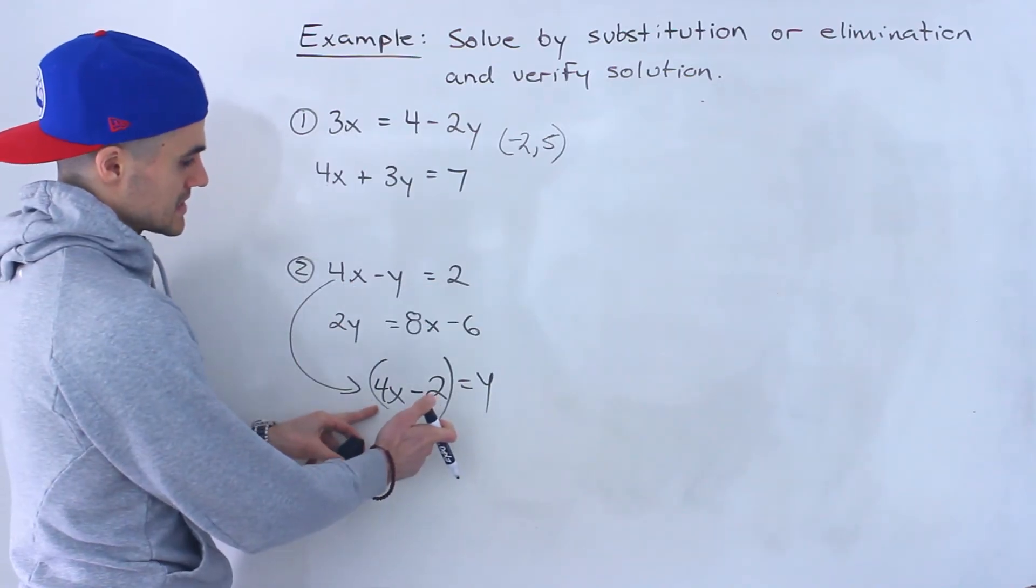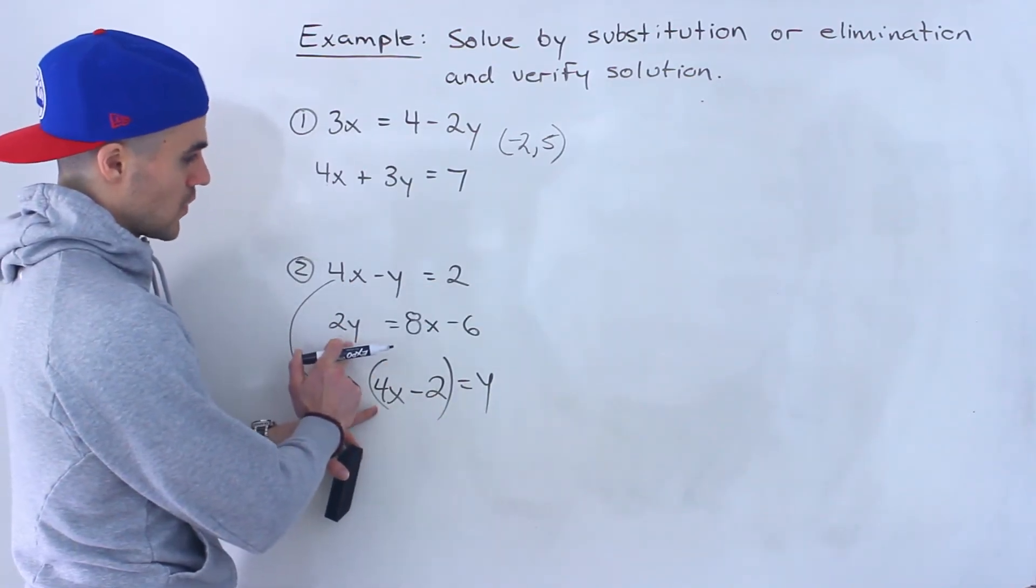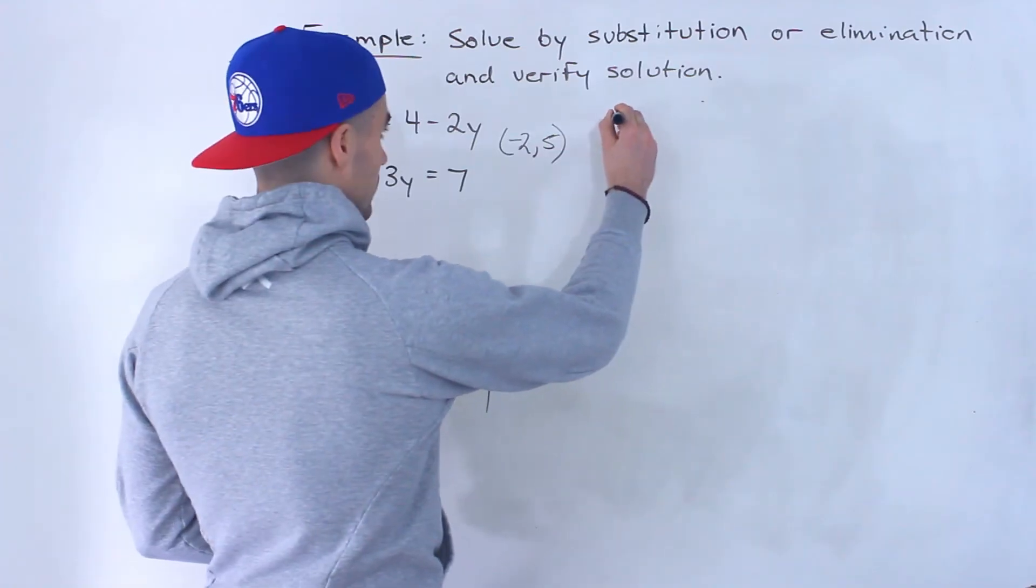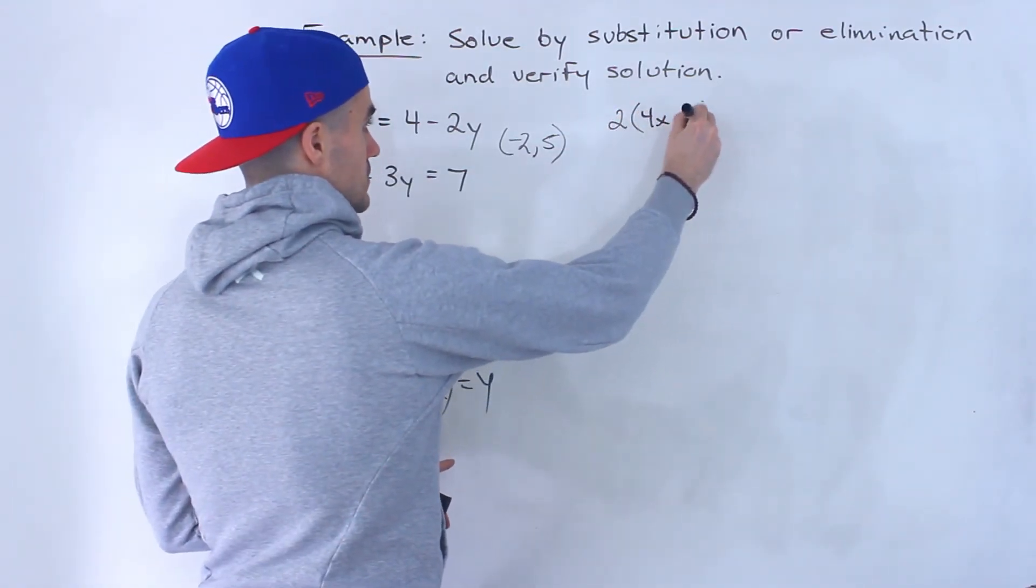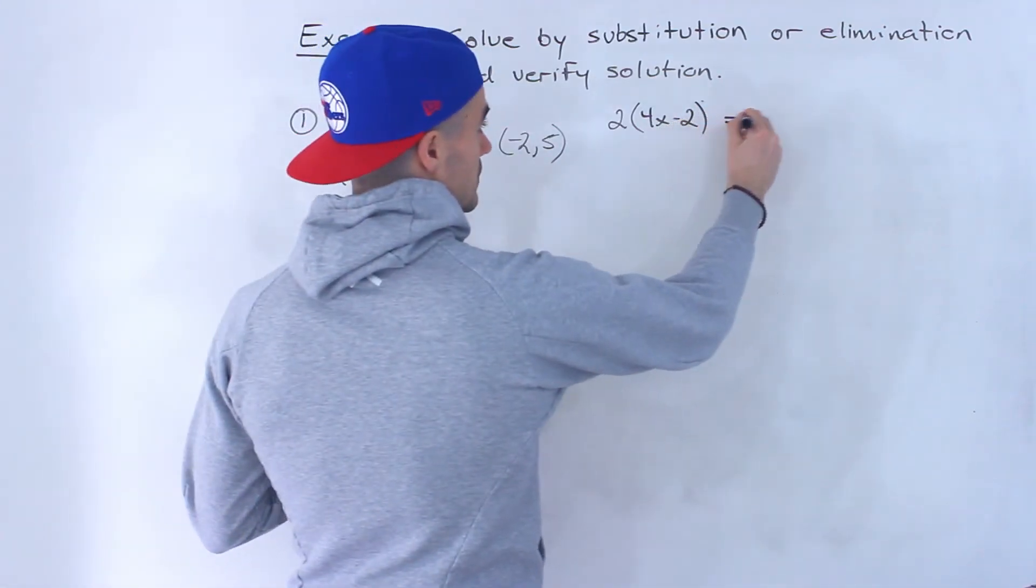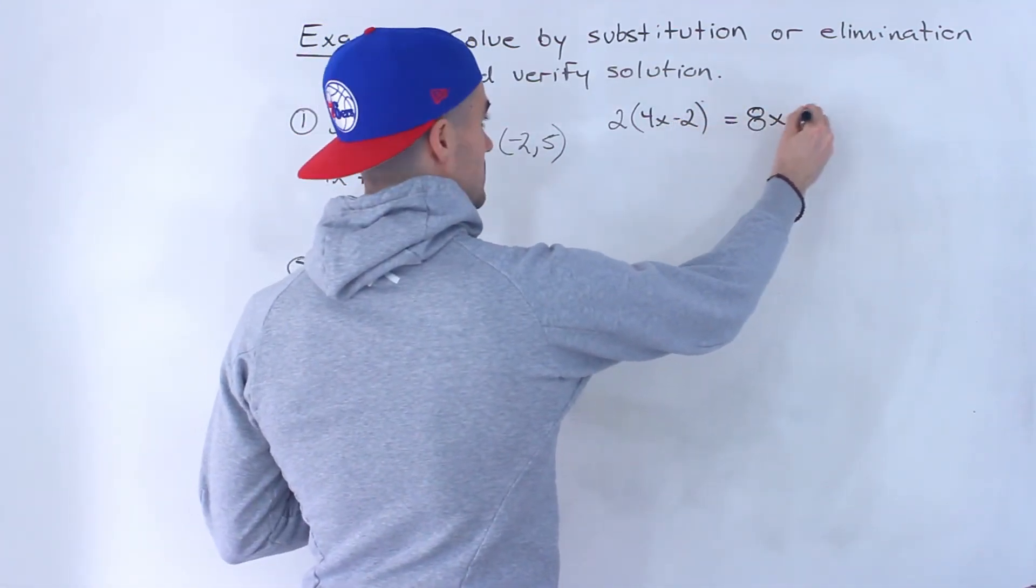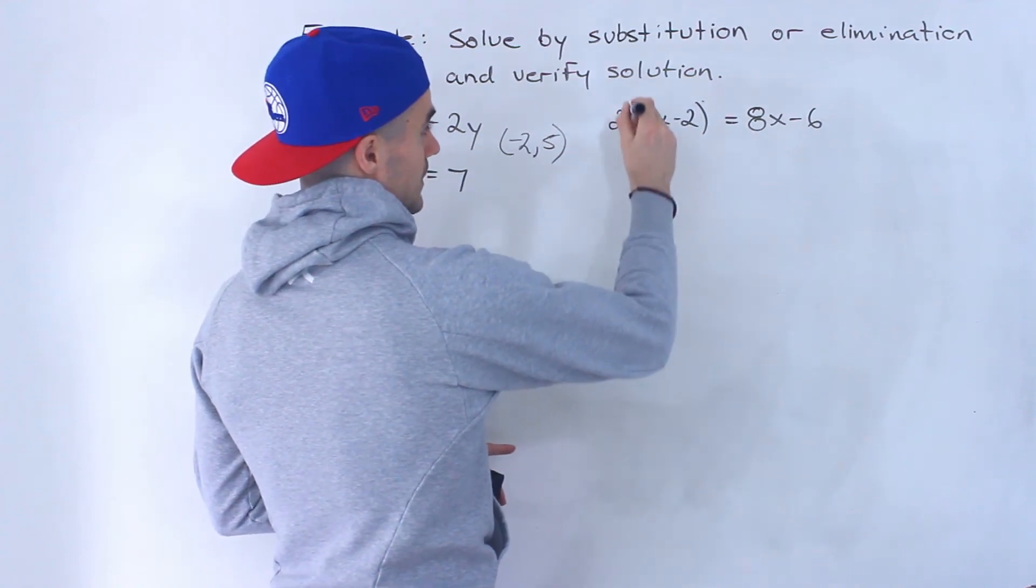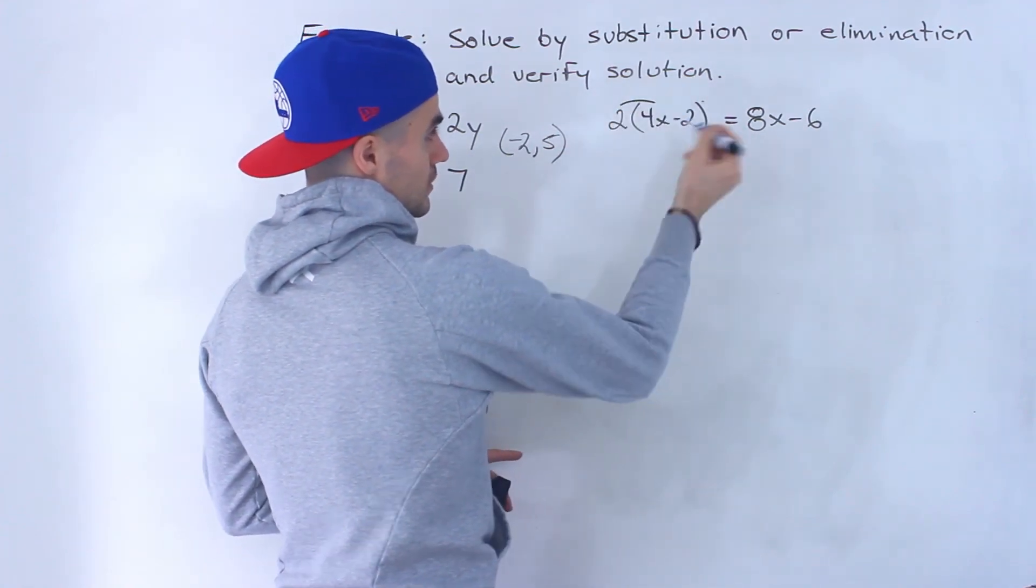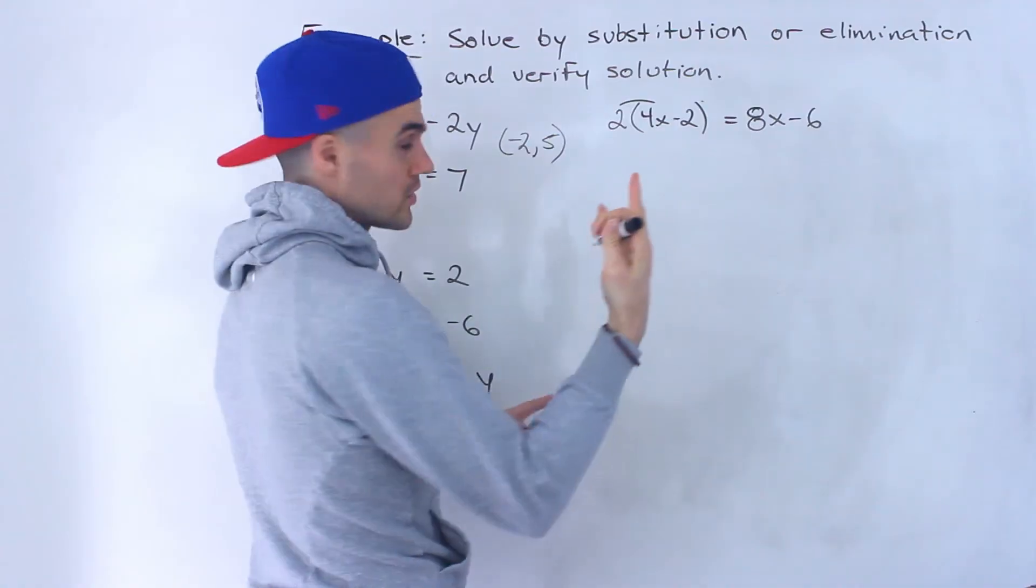And then I'm going to take this expression and I'm going to plug it in for this y on the second line. So we would end up having 2 times 4x minus 2 equals 8x minus 6. So now we have an equation in terms of one variable in terms of x.